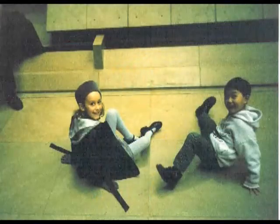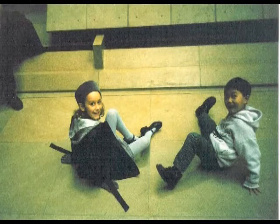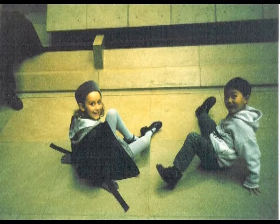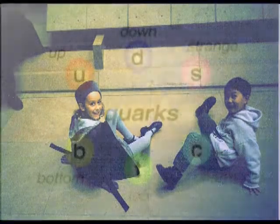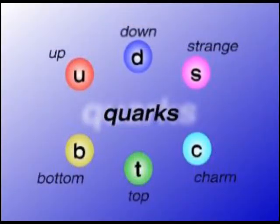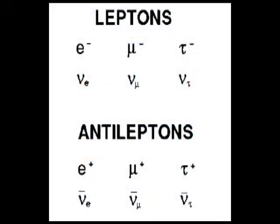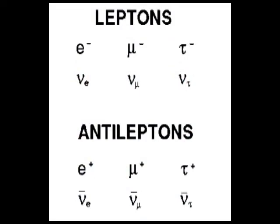Fermions are particles where no two can occupy the same state. There are forty-eight fermions, which were divided into twelve leptons and thirty-six quarks. There are six flavors of quarks: up, down, charm, strange, top, and bottom. There are three colors, red, green, and blue. The twelve leptons are the electron, muon, tau, E neutrino, M neutrino, and T neutrino, and their six antiparticles.